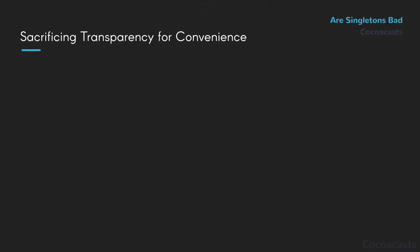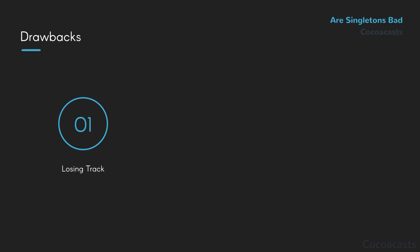I agree that the singleton pattern seems convenient and it may occasionally be warranted to use it, but the drawbacks far outweigh the benefits. Unfortunately, the drawbacks are very subtle at first, and that's what misleads many developers. The most important drawback of the singleton pattern is sacrificing transparency for convenience. Over time, you lose track of the objects that access the user object and, more importantly, the objects that modify its properties. The initial advantage of using a singleton — convenience — becomes the most important problem. Ironic, isn't it?